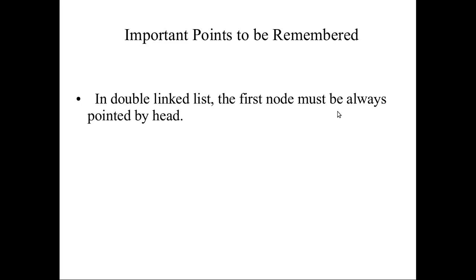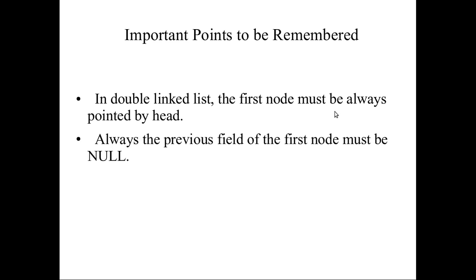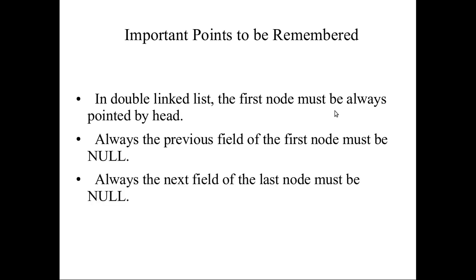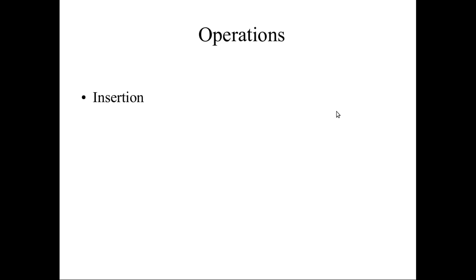Important points to remember in a doubly linked list: the first node must always be pointed to by the head — this is common in singly linked list as well. Since the head is the first node, link1 of the head has no previous node, so its previous address will be null. Similarly, the last node has no next node, so the next address field of the last node will also be null.